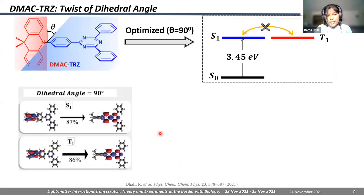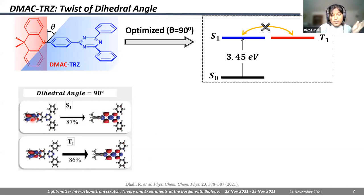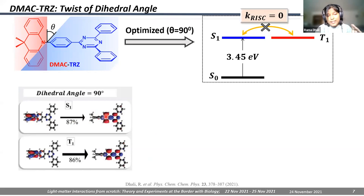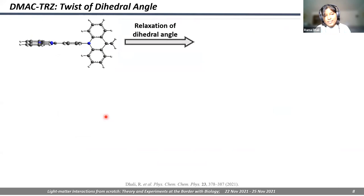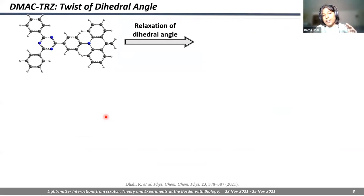First, we look at DMAC-TRC. When optimized in the ground state, the DMAC donor and TRC acceptor are completely orthogonal, and we get completely degenerate S1 and T1 — a pure charge-transfer state where charge transfer goes from donor to acceptor — giving zero spin-orbit coupling. But DMAC-TRC is a known blue TADF emitter, so the ground-state structure is not the same as the excited-state structure. When we optimized the excited state, S1 stays orthogonal, but the triplet relaxes to around 60 degrees. We then did a more systematic rigid dihedral angle scan, where we rotate the donor and acceptor without allowing the molecule to relax, and plot the energy.